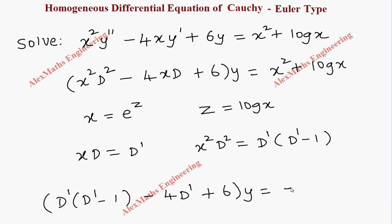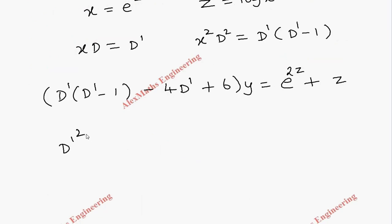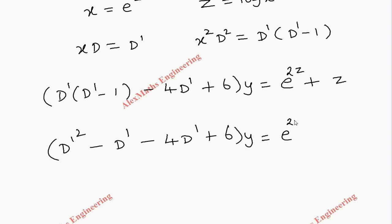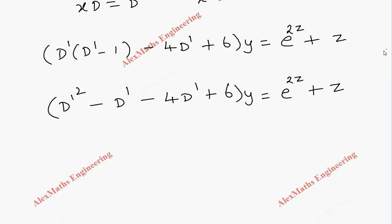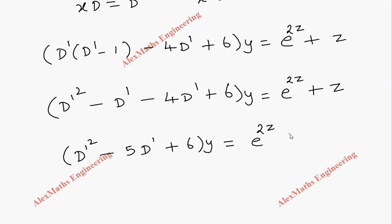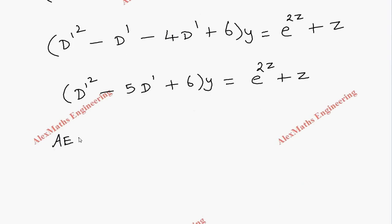...and here x² becomes e^(2z) since x = e^z, and log x becomes z. Expanding the first term: D'² − D' − 4D' + 6 into y equals e^(2z) + z. So this simplifies to D'² − 5D' + 6 into y equals e^(2z) + z.